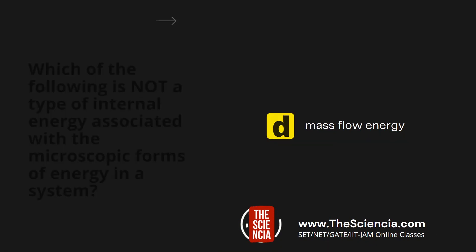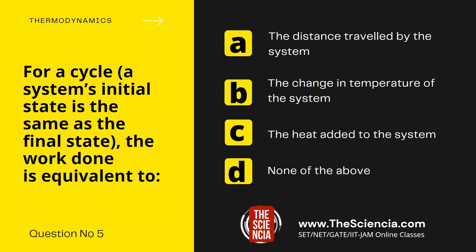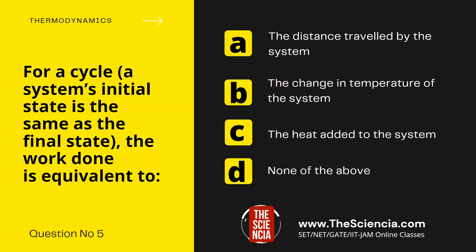Next question is question number 5. For a cycle — where a cycle means a system's initial state is the same as the final state — the work done is equivalent to: Option A, the distance travelled by the system. Option B, the change in temperature of the system. Option C, the heat added to the system. And Option D, none of the above.